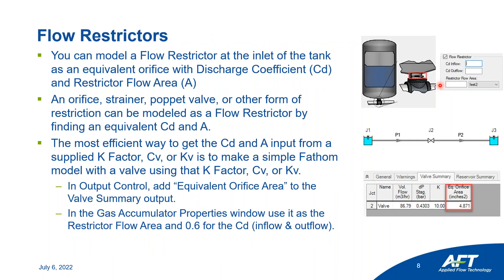Any passive restriction at the inlet of the gas accumulator tank can be modeled as a flow restrictor. The flow restrictor is assumed to be an orifice with a CD and area value. However, you can model a strainer, valve, or any other form of restriction by using an equivalent CD and area value. The most efficient way to get that CD and area input from a supplied K-factor, CV, or KV is to make a simple Fathom model with a valve using that K-factor, CV, or KV, then in output control add the equivalent orifice area parameter to the valve summary output. Once you get that value from Fathom, you can go back to the gas accumulator properties window and use it as the restrictor flow area.